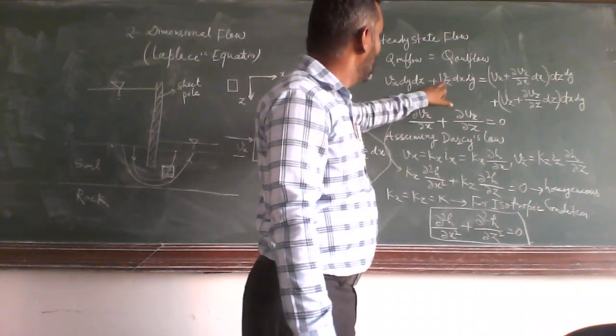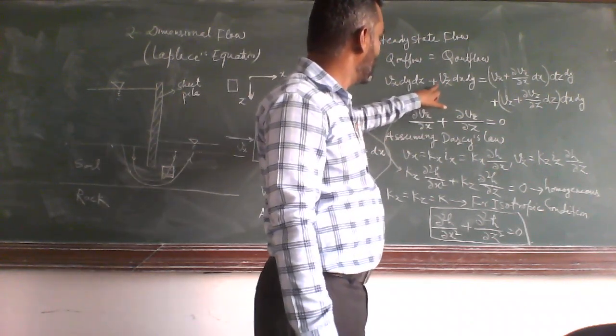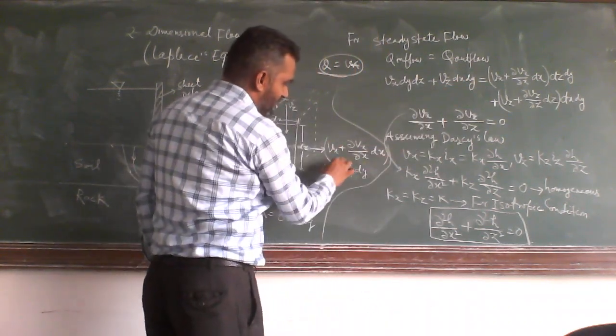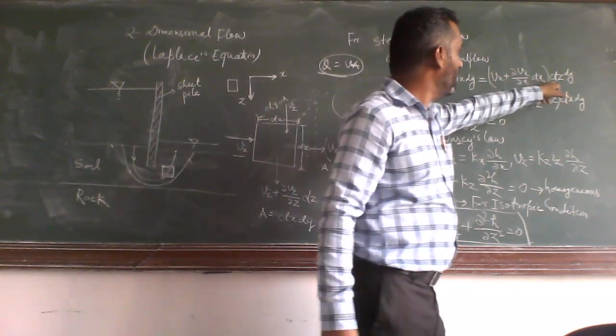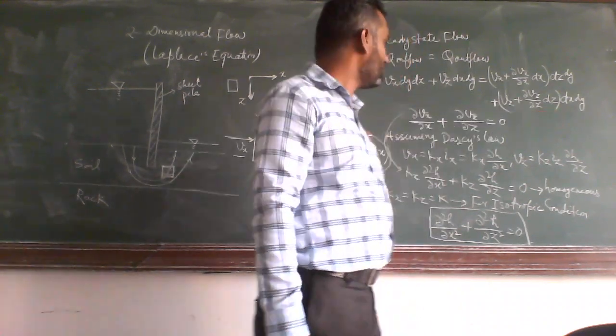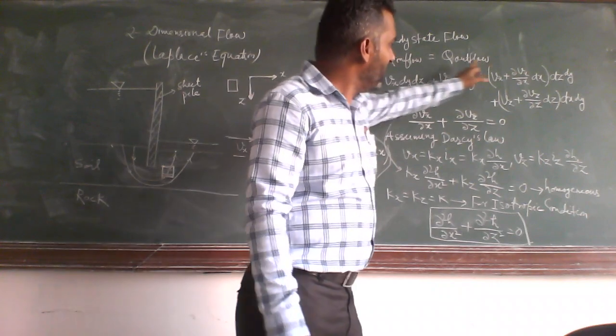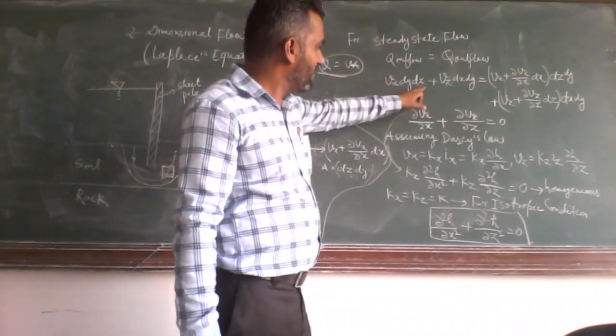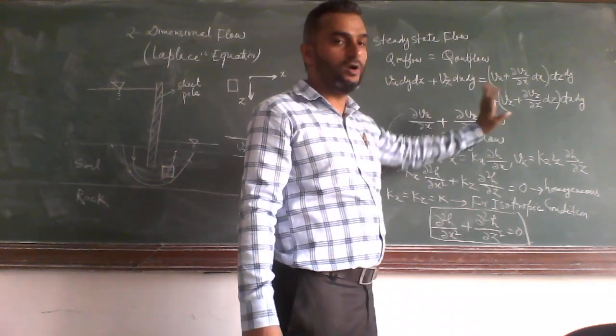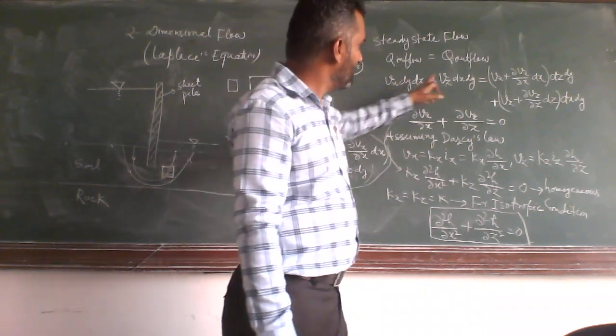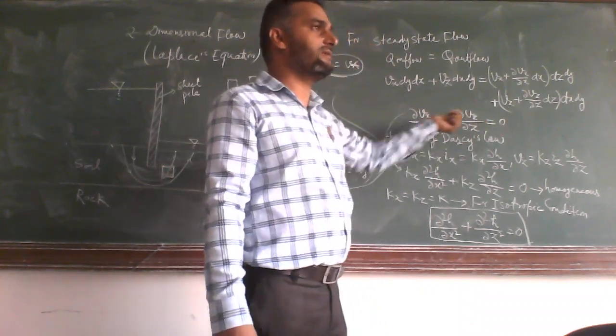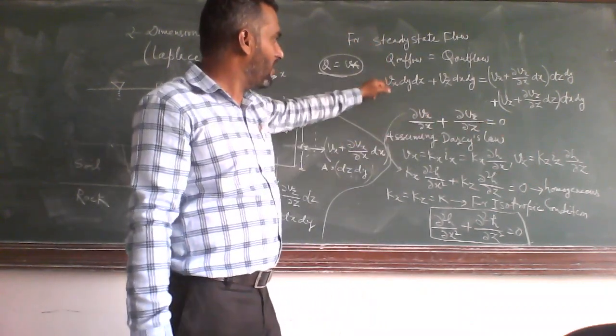And for outflow, this is the velocity and this is the area. If we get the total outflow along x axis and along y axis and simplify, rearranging this equation gives dvx by dx plus dvz by dz equals 0, because these terms will be cancelled. Only this term will remain. This is the simplified equation after rearranging all this.